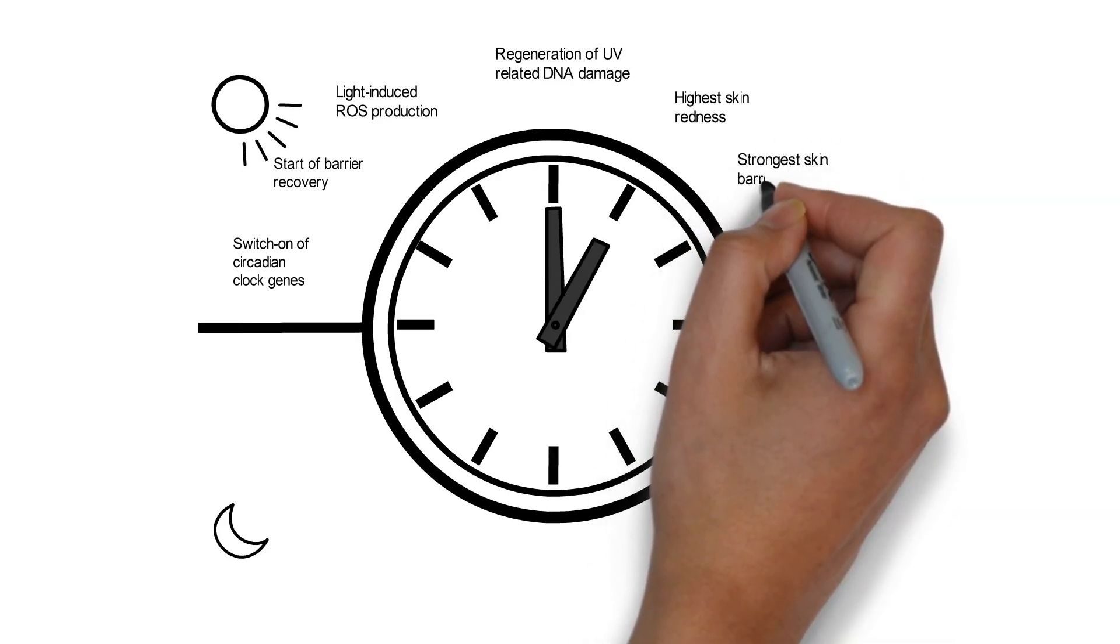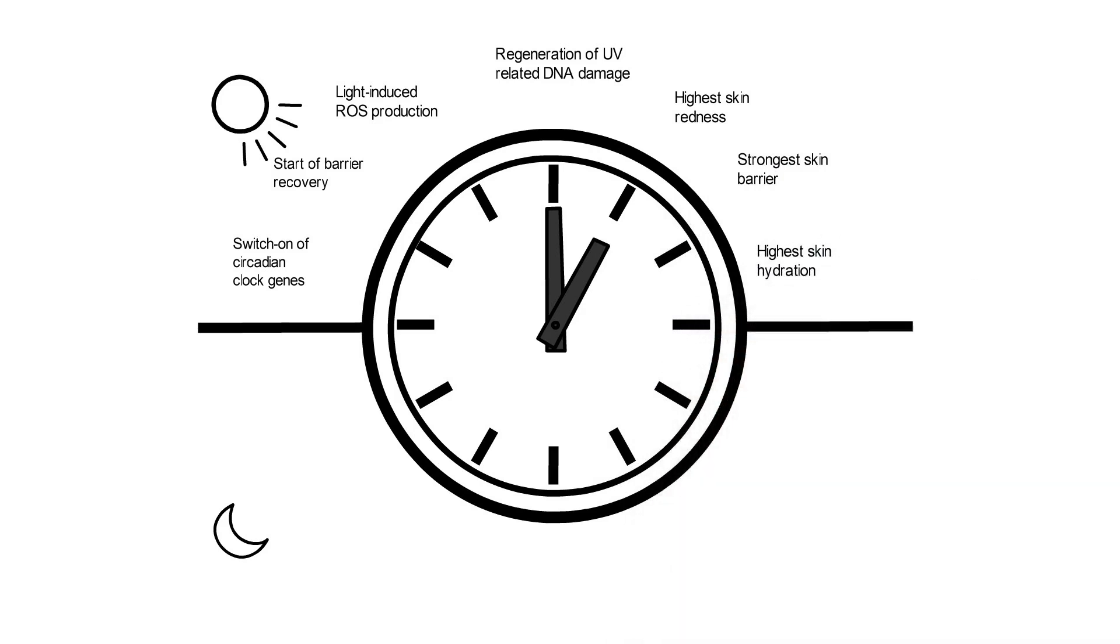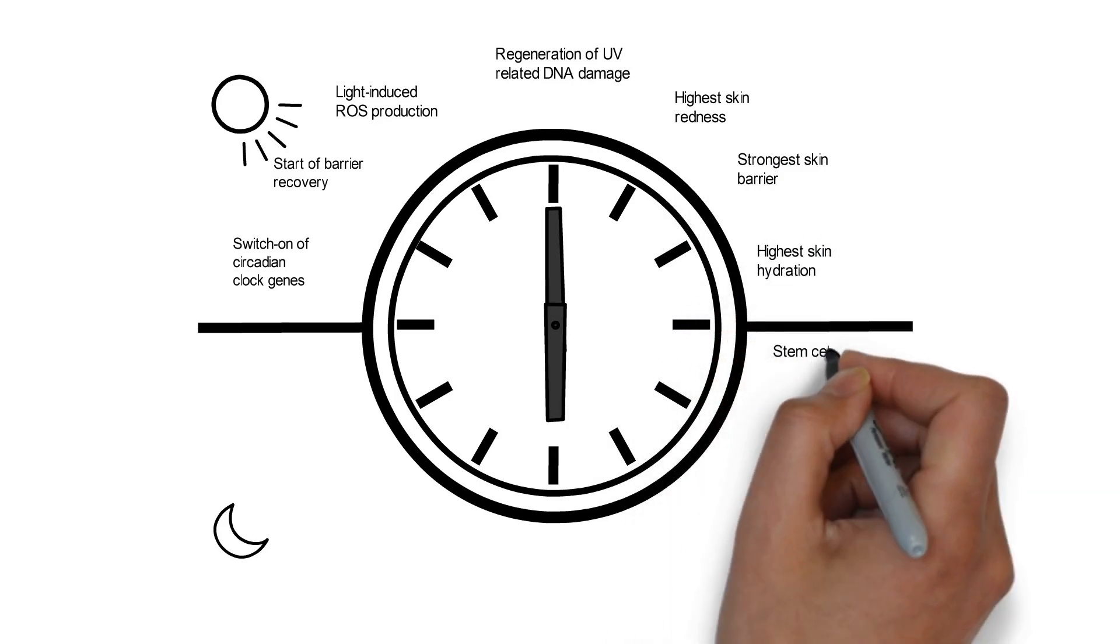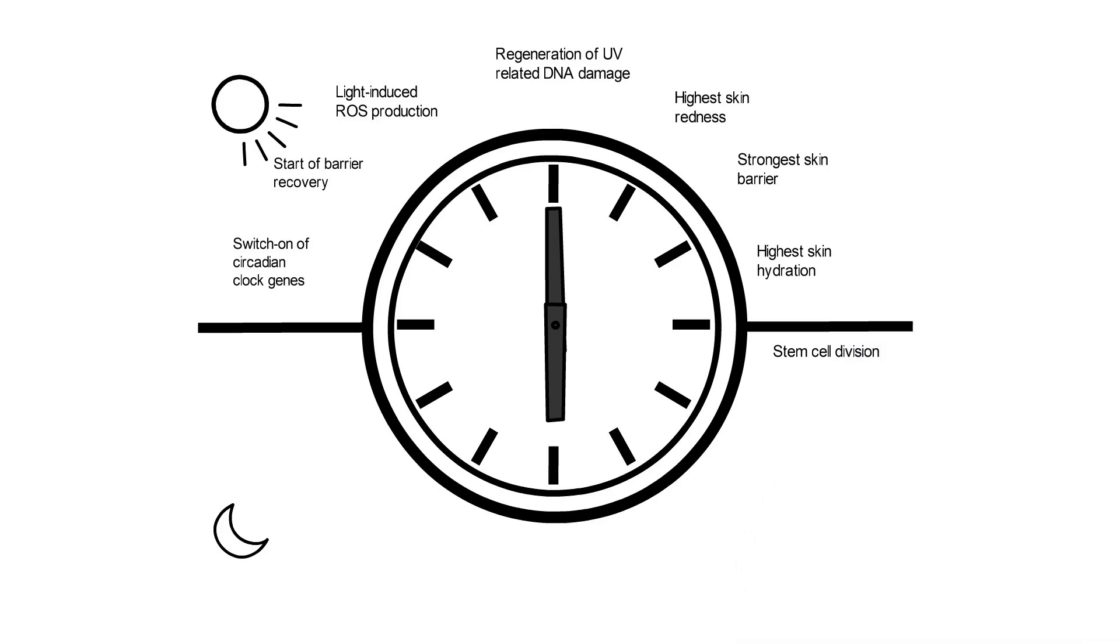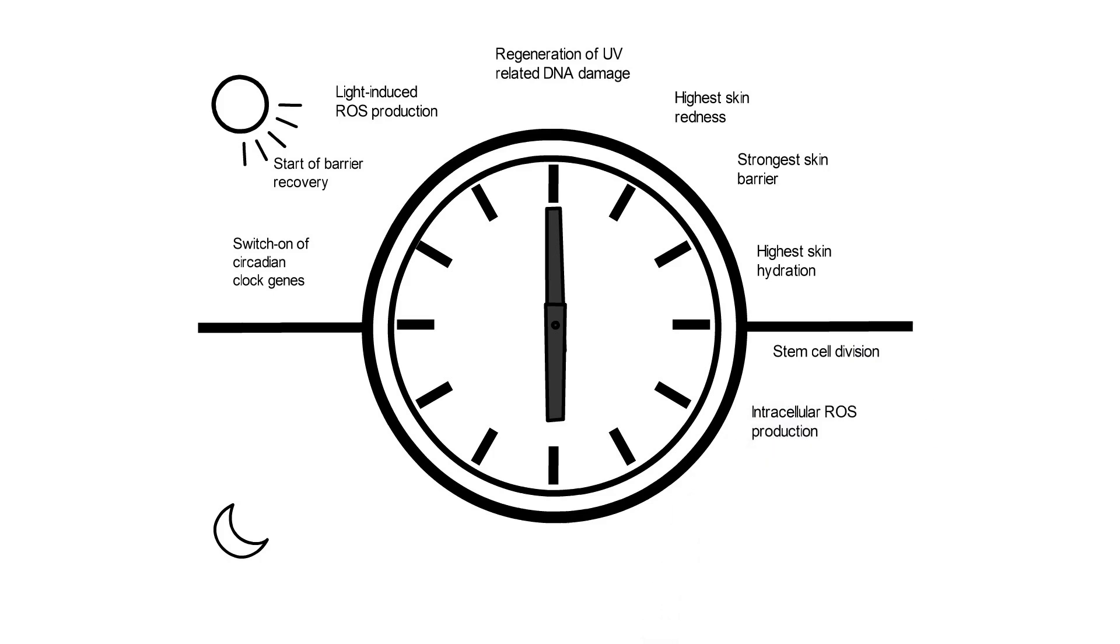In the afternoon, the skin barrier is recovered and the skin is most hydrated. After sunset, skin stem cells divide themselves and produce a new cell layer to regenerate the epidermis. Intracellular ROS production is highest. It creates DNA damage, which is repaired during the night.